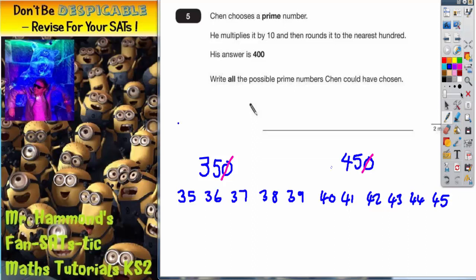And then we're going to choose from this which ones are our prime numbers. So, 35 is in the 5 times table. We can knock that out. 36 is an even number. We can knock out all the even numbers because the only even prime is 2. So any other even numbers are not going to be prime.